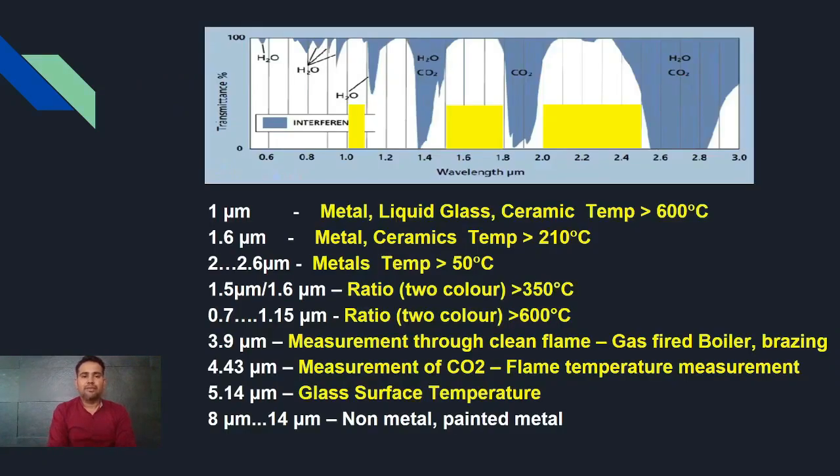This is some example like 1 micron is the window used for metal, liquid glasses, ceramic temperature. 1.6 is for metal ceramic temperature greater than 210 degree. 2 to 2.6 is for metal temperature greater than 50 degree and so on. And 8 to 14 micron is used for non-metals and painted oxides.